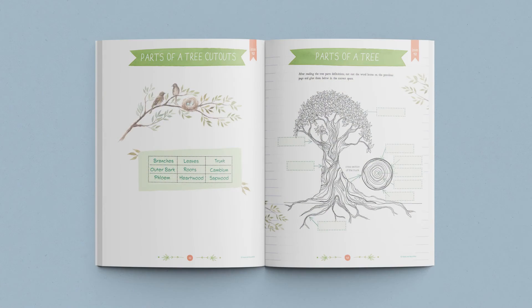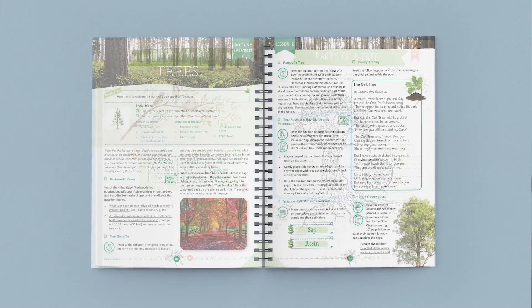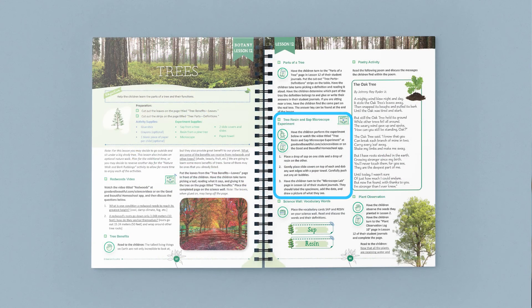Next, your students will complete the parts of a tree activity in their student journals, and then perform an experiment to discover the difference between sap and resin. All the experiments can be watched on our website or app if you prefer.